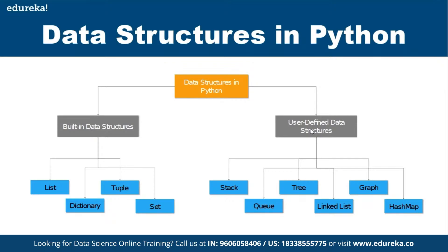When you say user-defined data structures, you can have stack, queue, tree, linked list, graph, hash map, or anything. User-defined simply means something you developed — it is not something the language has given you. We have listed some which are considered standard and written in books, but that does not mean you cannot come up with a new data structure on your own. That's why the name 'user-defined.'